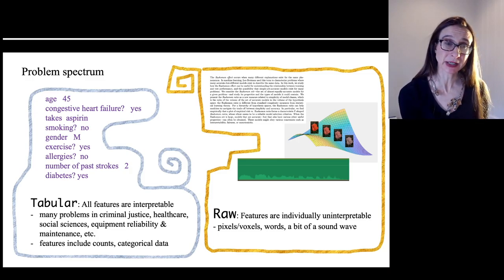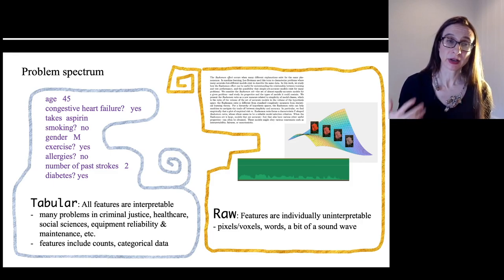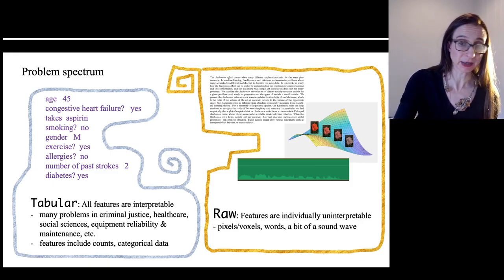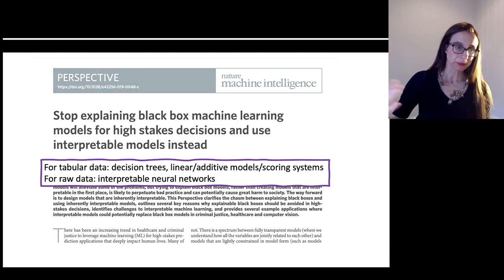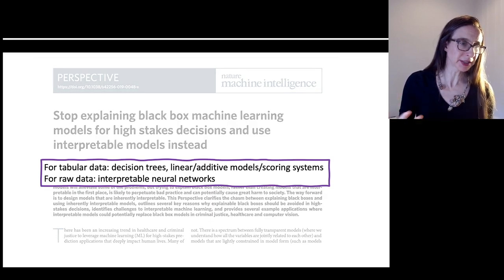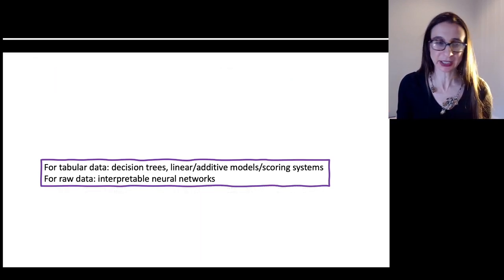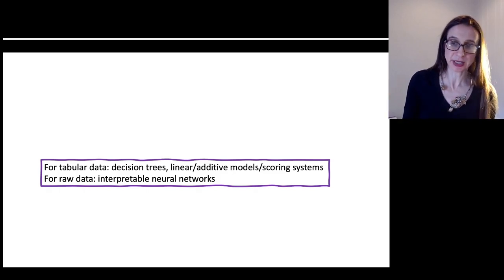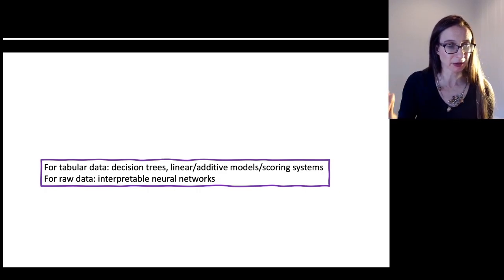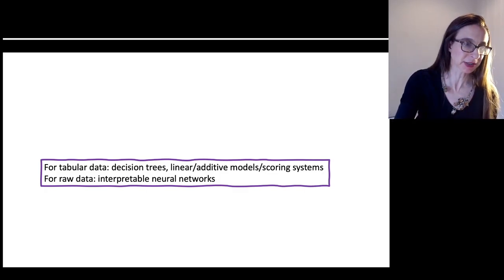In neither case — tabular nor raw data — do you actually need a black box. You can get inherently interpretable models in both cases. An interpretable model is not a post-hoc explanation of a black box; it's a model that's actually constrained so that it reasons about things in a specific way. I wrote this all up in a paper called 'Stop Explaining Black Box Machine Learning Models for High-Stakes Decisions and Use Interpretable Models Instead.'